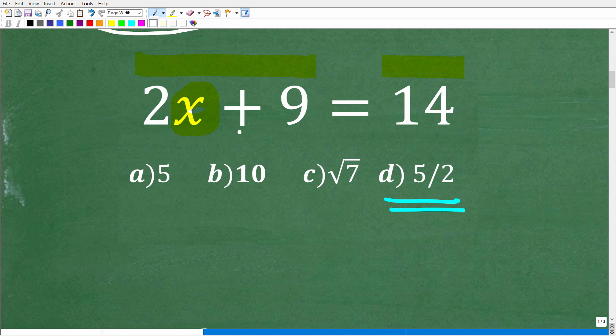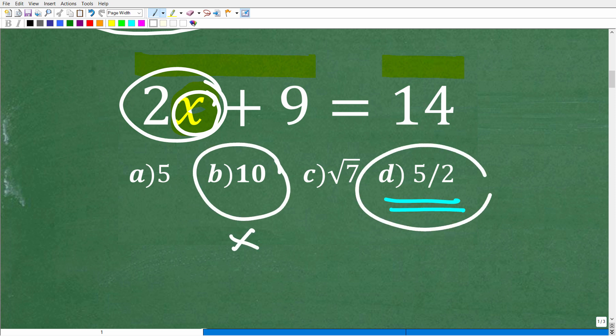Alright, so here is our equation. It's 2x plus 9 is equal to 14. And in algebra, 2x means 2 times some number x. Alright, so let's check two solutions. We'll check 10, which, of course, is going to be wrong. And then, of course, we'll check the correct answer, which is 5 halves.